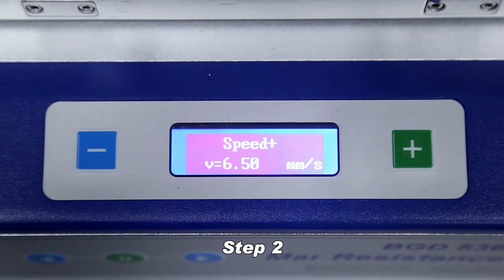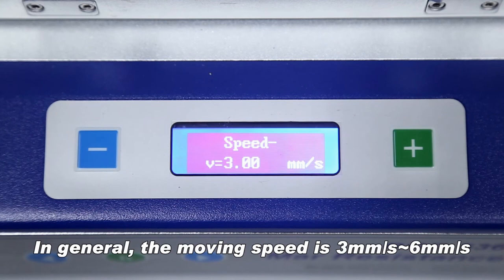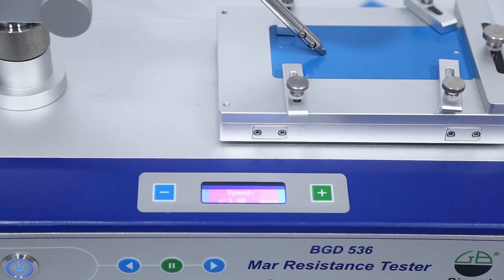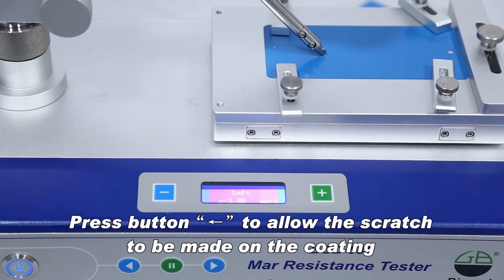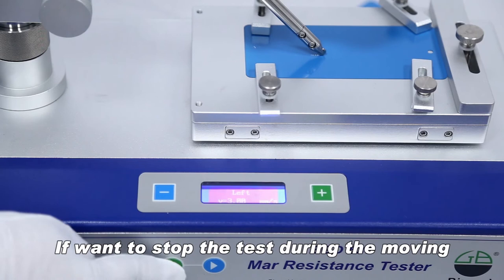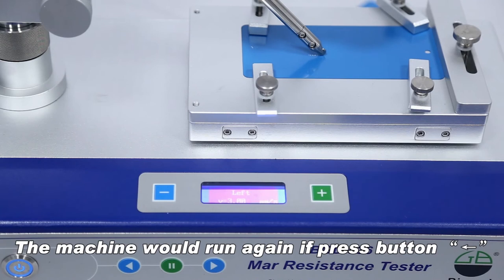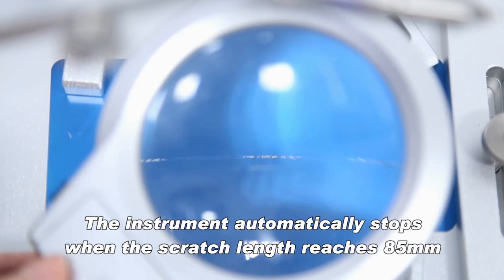Press button plus minus to set the moving speed according to the test requirement. In general, the moving speed is 3 mm per second to 6 mm per second. Press button to allow the scratch to be made on the coating. Press button to stop it. The machine would run again if press button. The instrument automatically stops when the scratch length reaches 85 mm.